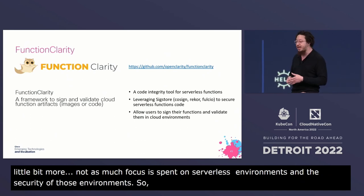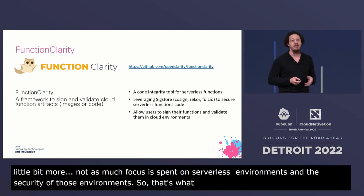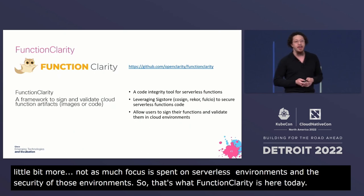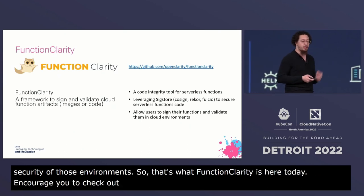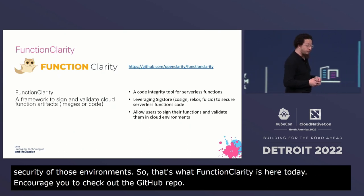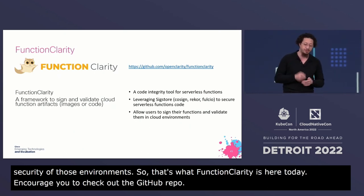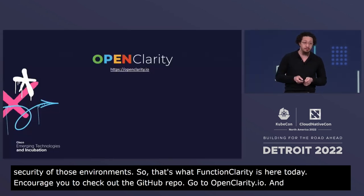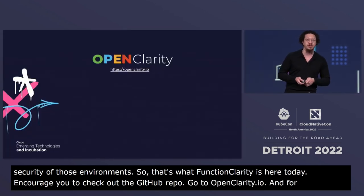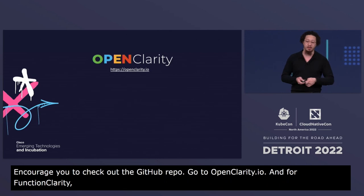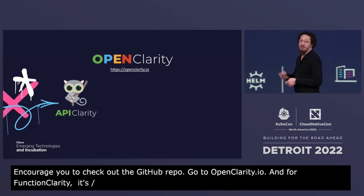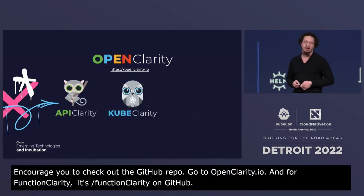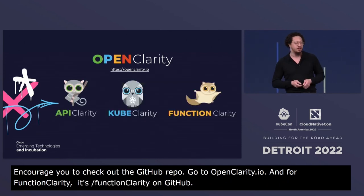I encourage you to check out the GitHub repo — go to openclarity.io, and for FunctionClarity it's openclarity/functionclarity on GitHub. Reintroducing the OpenClarity umbrella: we've got API Clarity, KubeClarity, and FunctionClarity.